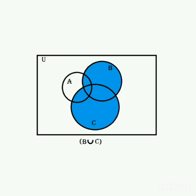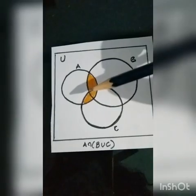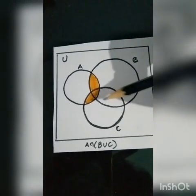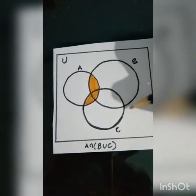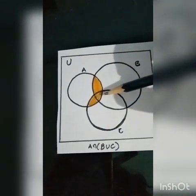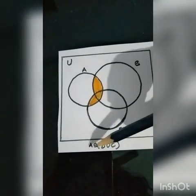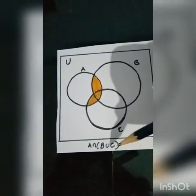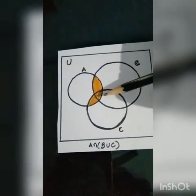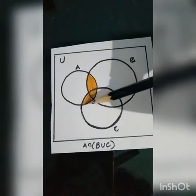In this diagram, the shaded region represents B union C. In this Venn diagram, this whole region represents B union C, whereas A intersection (B union C) is represented by this region in the orange color.